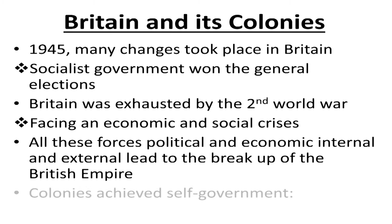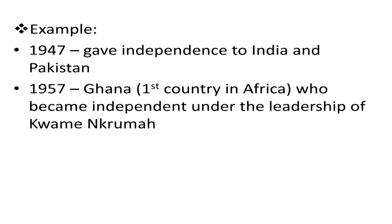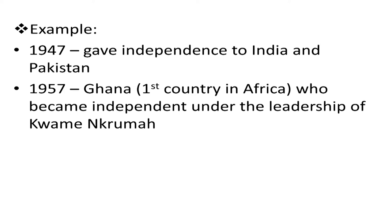For example, in 1947, the British government gave independence to India and Pakistan. In 1957, it gave independence to Ghana, which made Ghana the first African country to be independent, under the leadership of Kwame Nkrumah. Soon, many African countries won their independence.